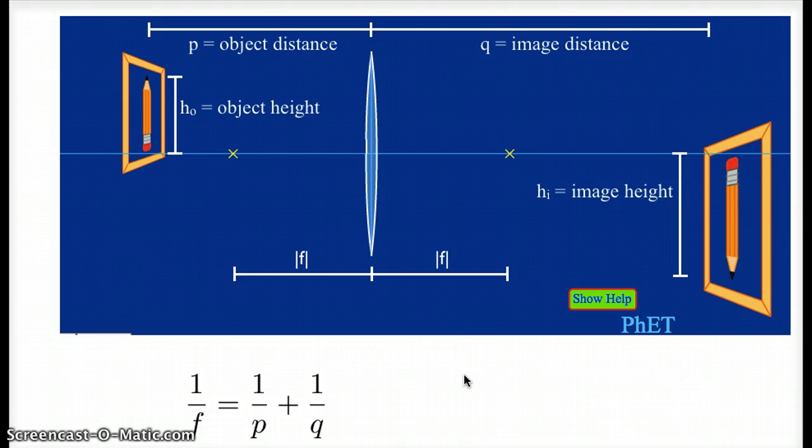So in this diagram that we're looking at, if we wanted to use the lens equation, f would be a positive value because it's a positive number for converging lenses, which is what we have. p would be a positive number because we expect the object to be on the incoming side of the lens. And q would be a positive number because the image is on the real side, the outgoing side of the lens.